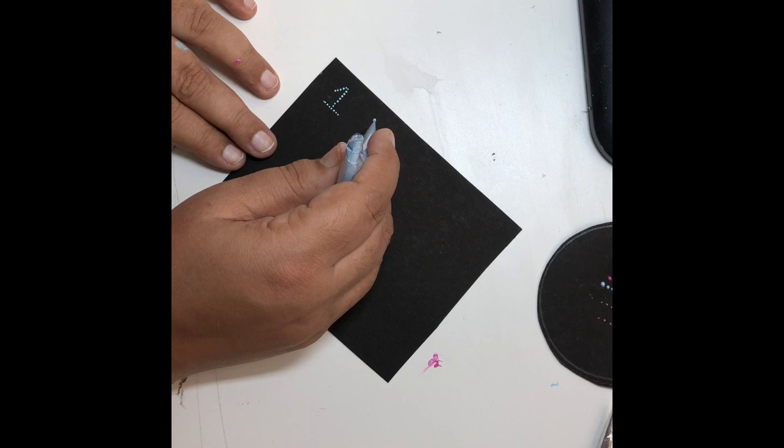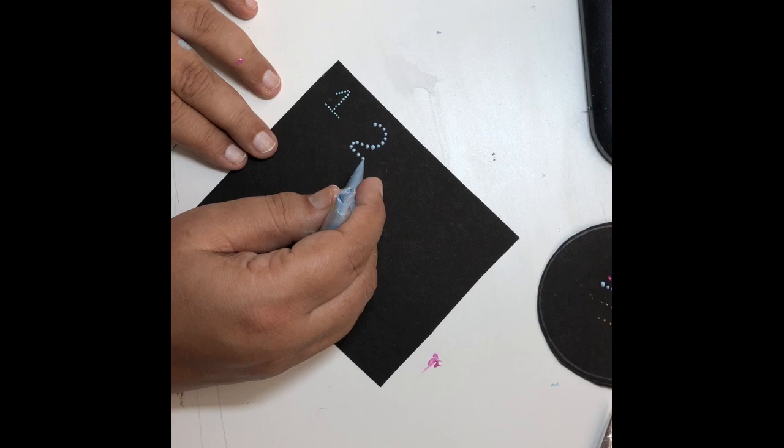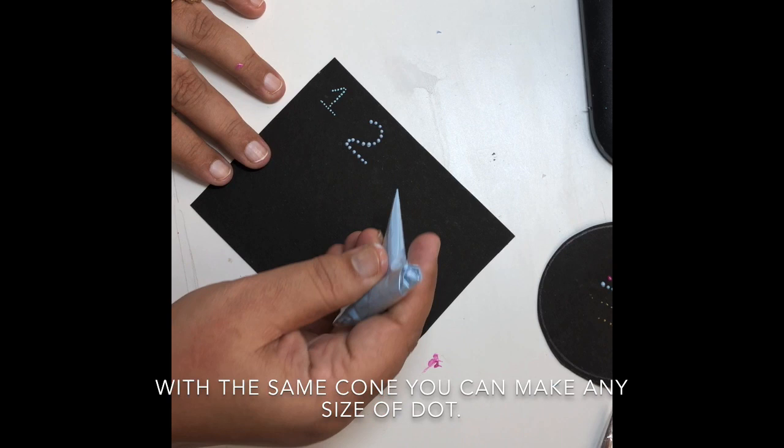Next comes a little bit medium-sized dots. You have to just press the cones slightly and put it on the surface and these dots will be perfect. So from the same cone you can make all sizes of dots - very small, a little bit medium size.